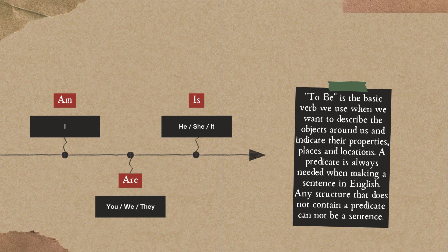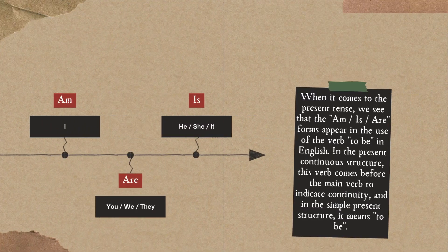A predicate is always needed when making a sentence in English. Any structure that does not contain a predicate cannot be a sentence. When it comes to the present tense, we see that the am, is, are forms appear in the use of the verb to be in English.